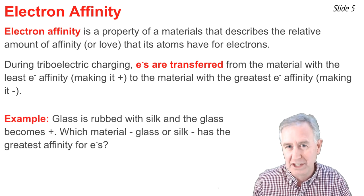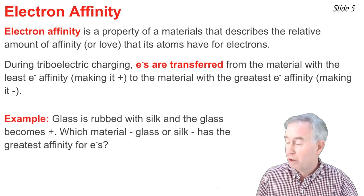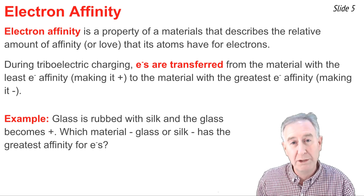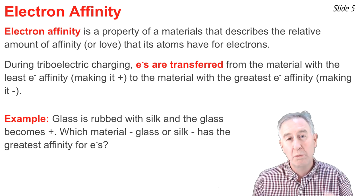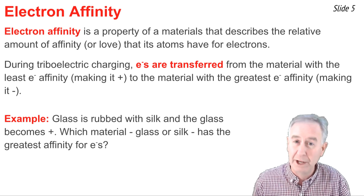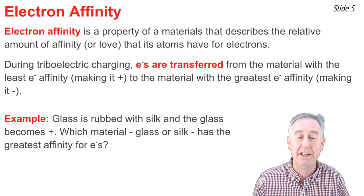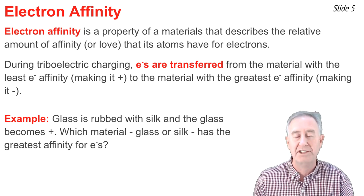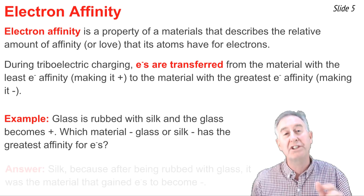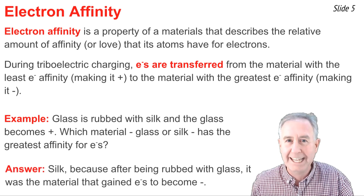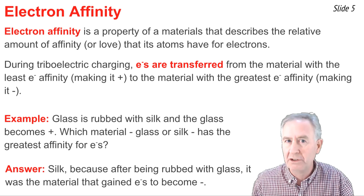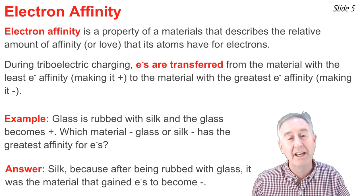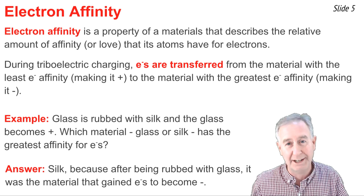Let's consider this example: A piece of glass is rubbed with silk, and the glass becomes positive. We can use this information to determine which of the two materials has the greatest electron affinity. In this case, electrons must be transferred off of the glass — making it positive — onto the silk, making it negative. So since the silk grabbed the electrons from the glass, the silk must have the highest electron affinity.